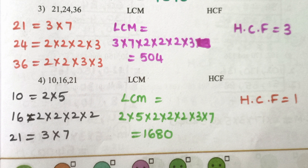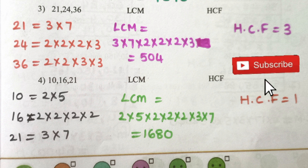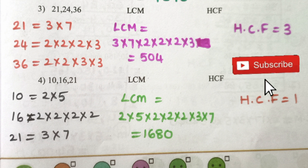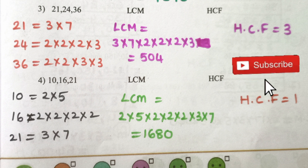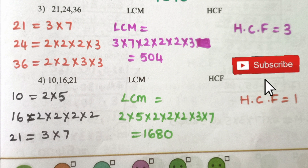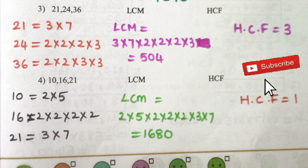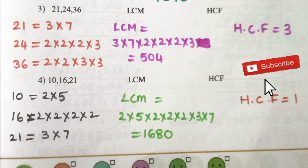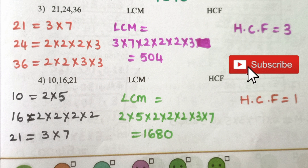Question 4: 10, 16, 21. Factorizations: 10 = 2×5, 16 = 2×2×2×2, 21 = 3×7. LCM is equal to 1680, HCF is equal to 1.